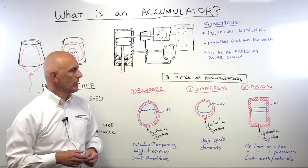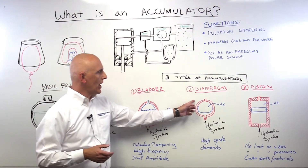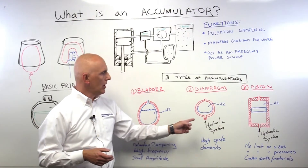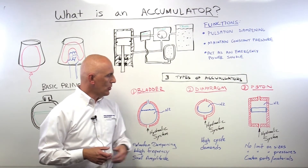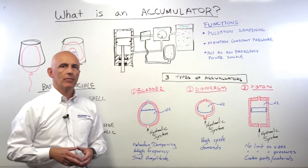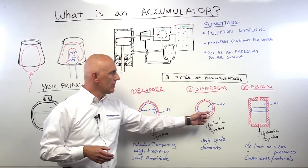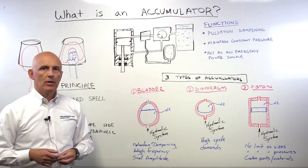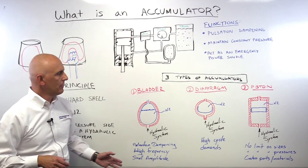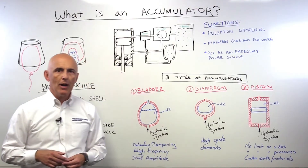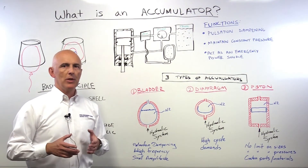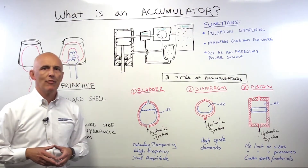Then we go to the diaphragm type accumulator. Basically the same — you have a carbon steel shell, but instead of a bladder, you have a diaphragm. Also a pre-charge of nitrogen, and this portion is connected to the system. Very similar application to the bladder type accumulator, but with an advantage: since you don't have a seam in the diaphragm, you don't have the restrictions of the bladder type. The application is pretty much the same, but this is a really reliable accumulator especially when you have high cycle demands — 1 million, 2 million, 3 million cycles. This is where to use a diaphragm accumulator.